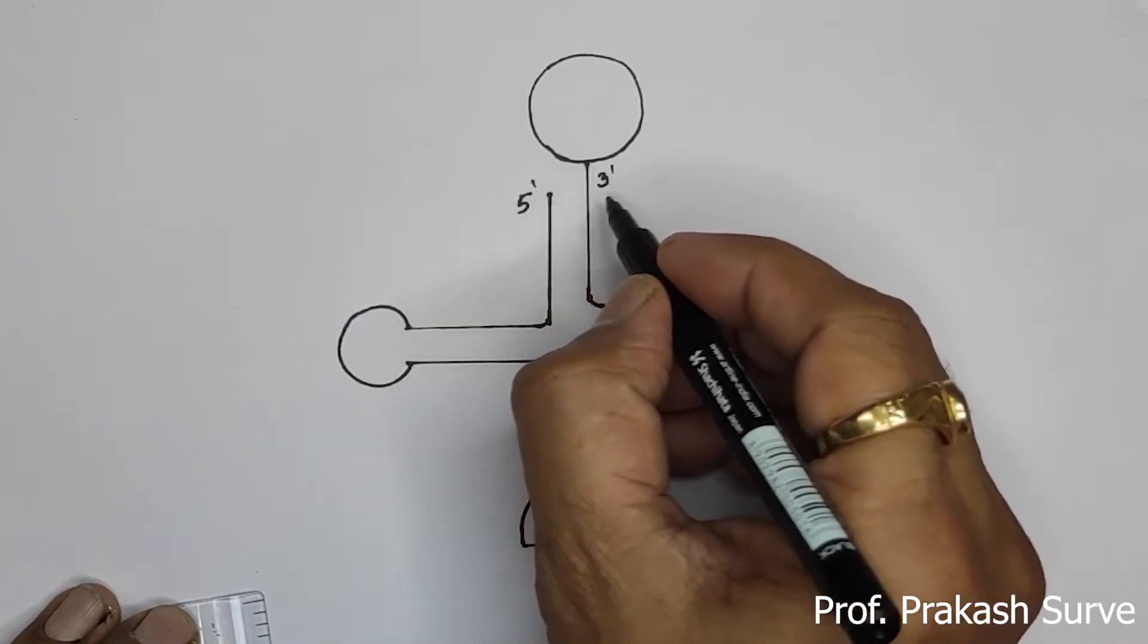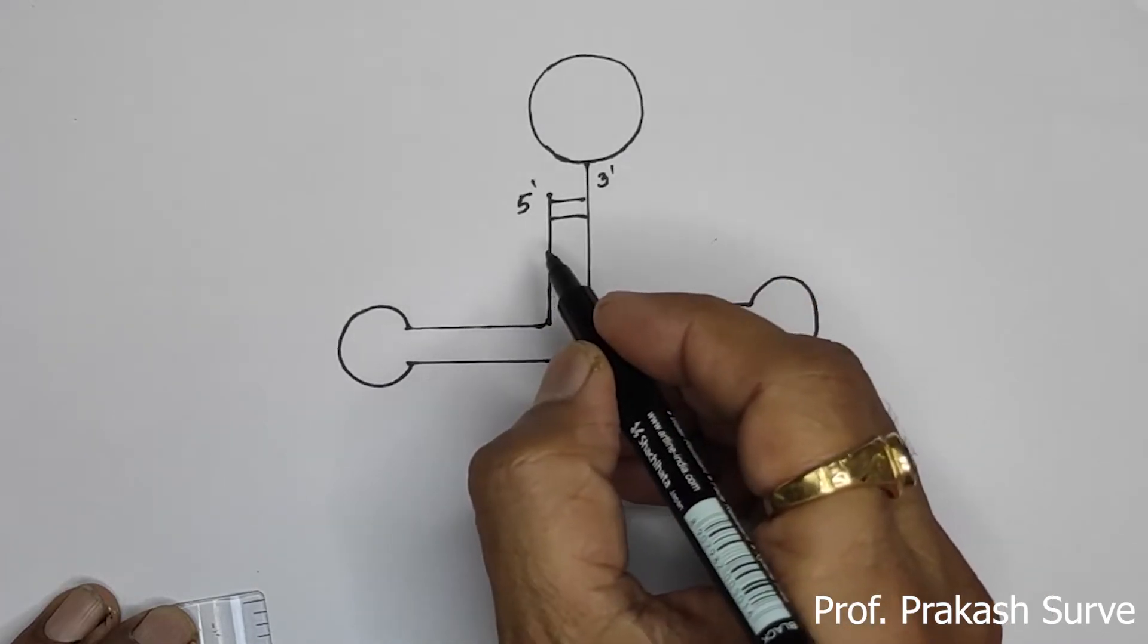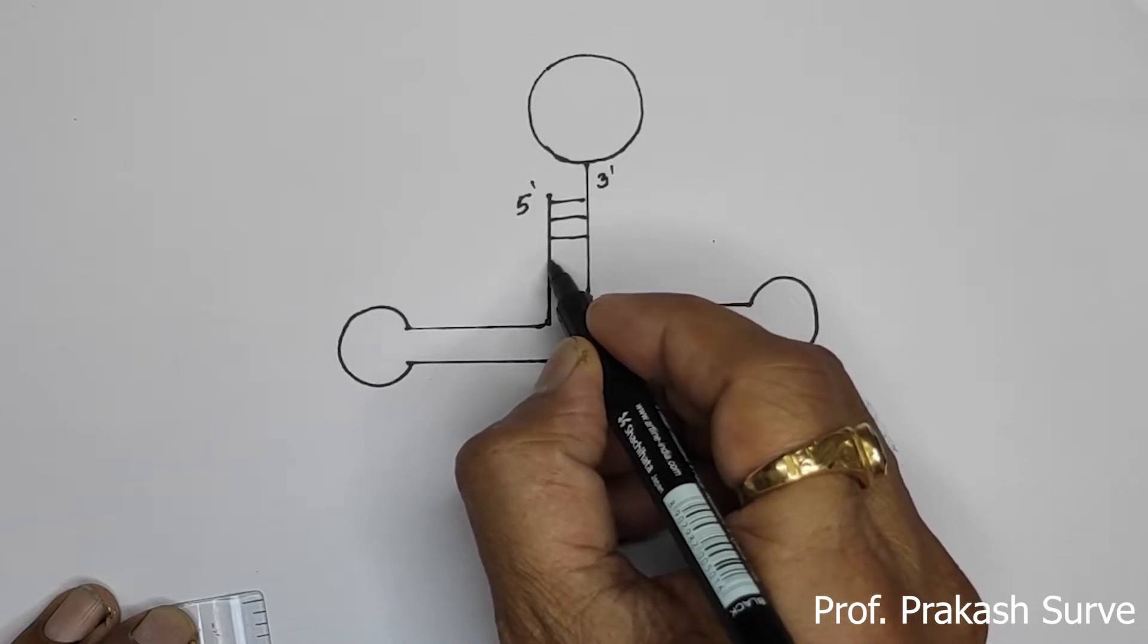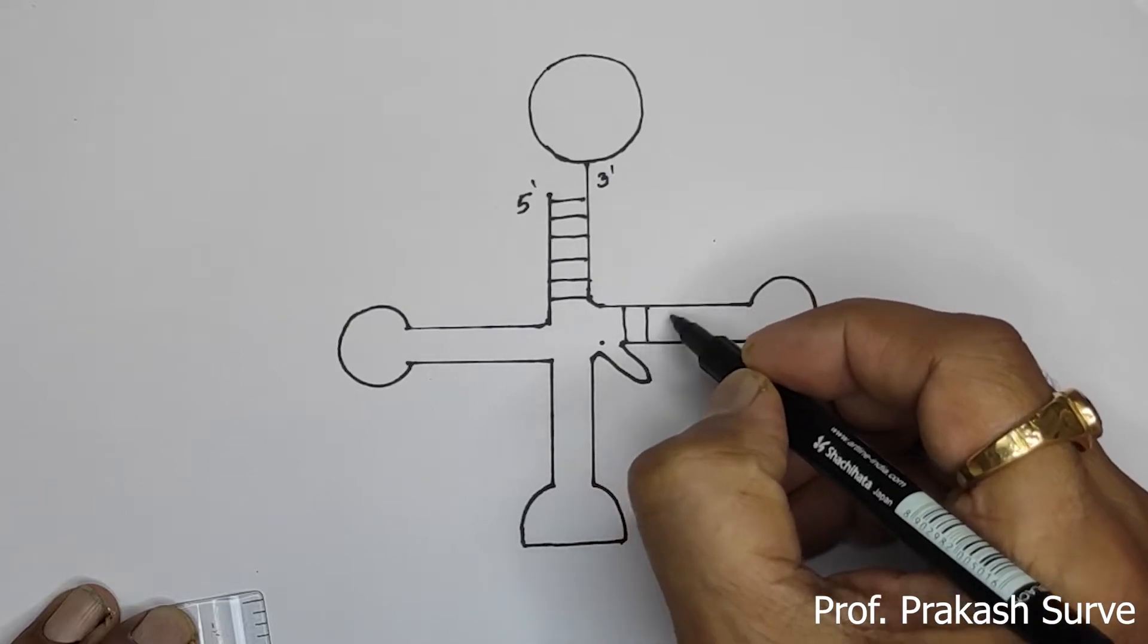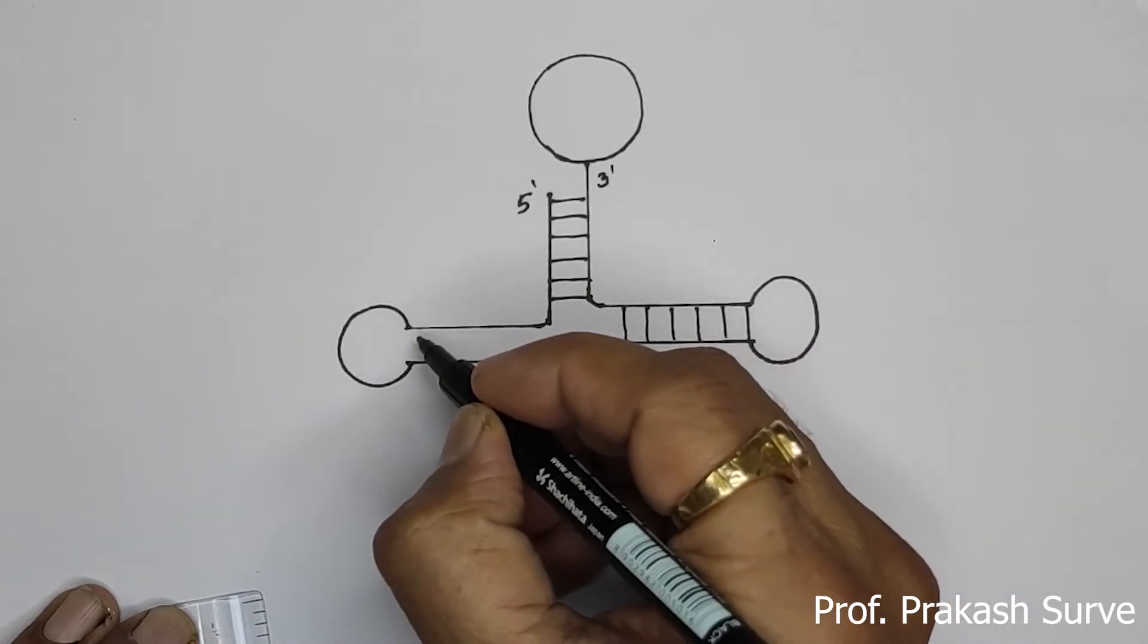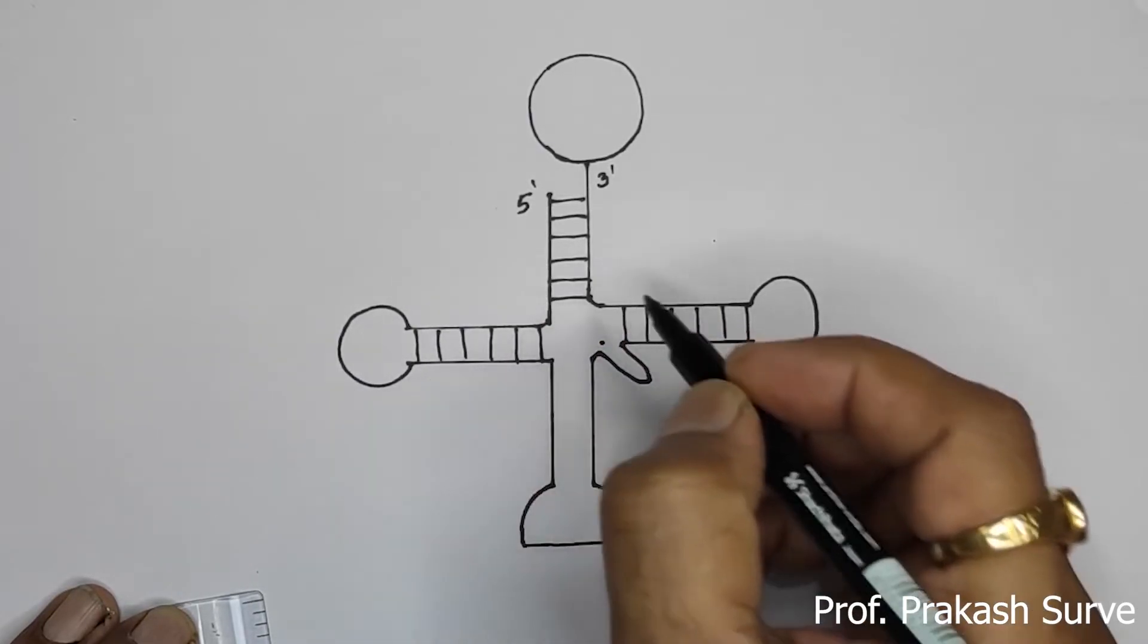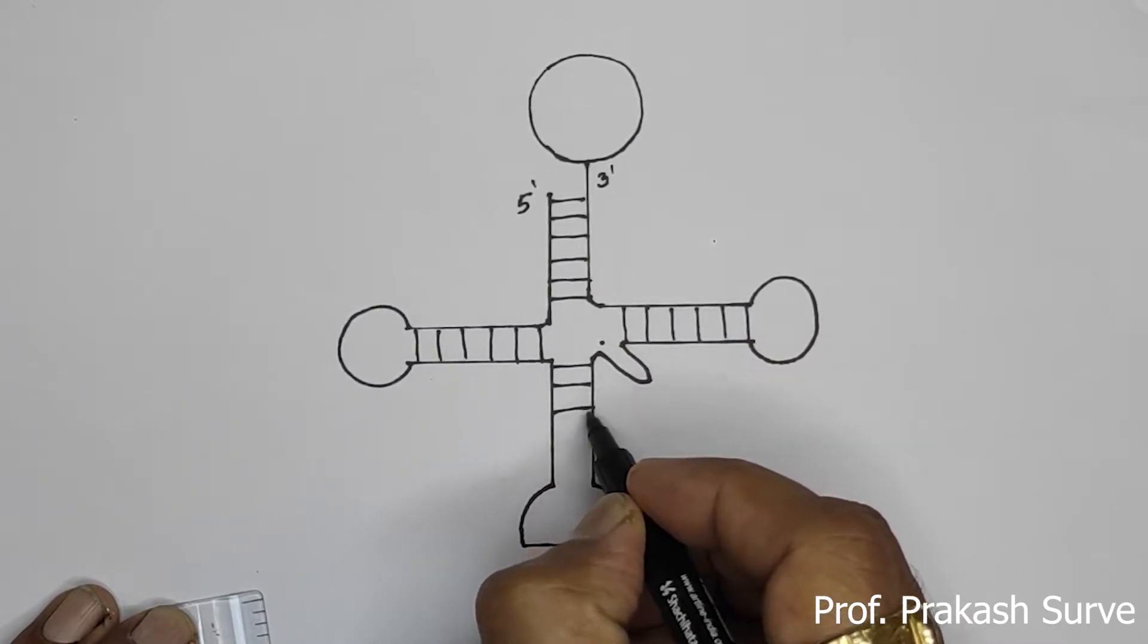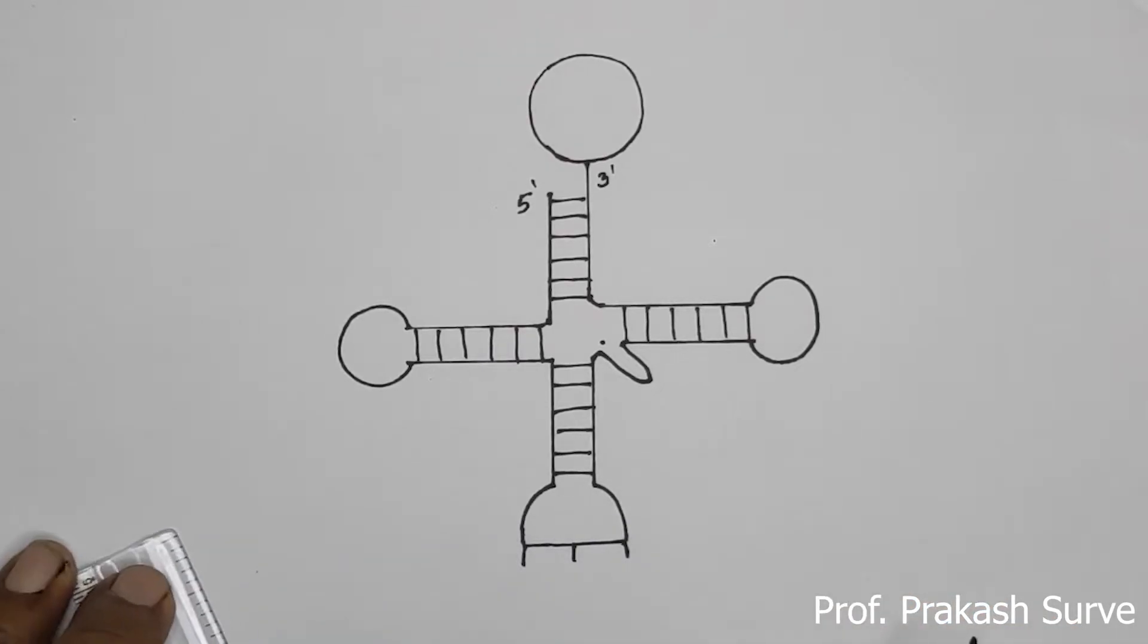Now we will join these lines here to here. So this is the intramolecular base pairing. Same way here also. Same here also. Here we will write the lines for the anti-codons.